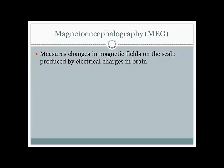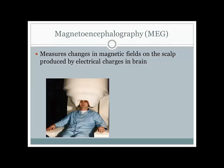Whereas with an EEG you get little sensors on your skull, with an MEG the apparatus is a lot more intimidating—but it has to be that big to be able to measure the minute changes in magnetic fields that are produced. The really great thing about this is we can start to trace where an electrical impulse starts and where it goes to next, allowing us to start mapping neural networks.